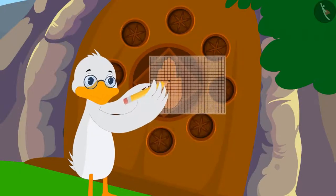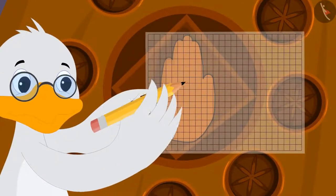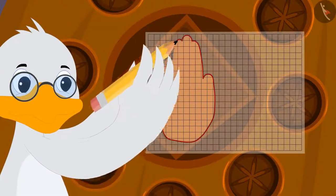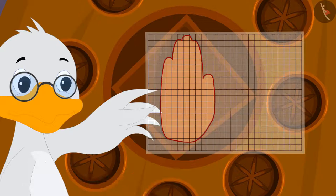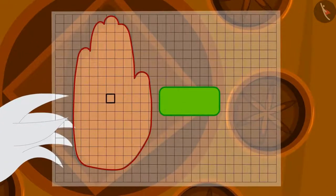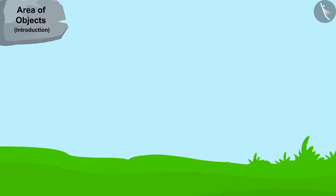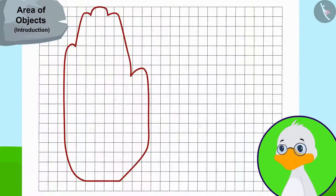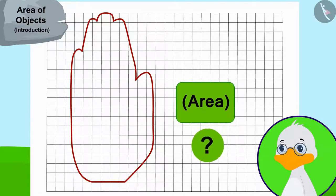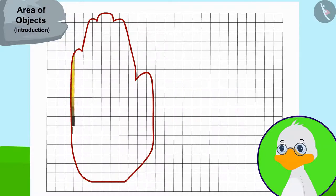Uncle immediately traced the hand impression on the door onto a paper in this way. This paper has similar squares of one square centimeter each. Uncle then counted the number of squares covered by the hand impression to find the area of the hand impression.